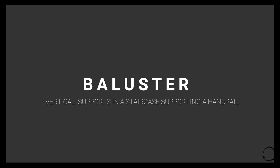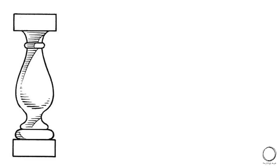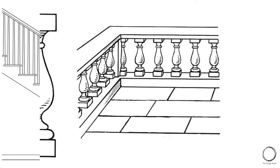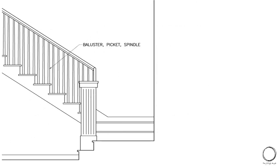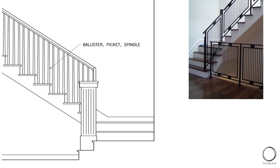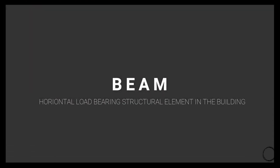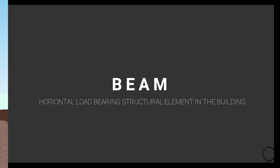Moving on, the next term is baluster, which means vertical supports in a staircase supporting a handrail. Here is one kind of baluster used many times in series to support the handrail above. The baluster can be in any shape and form, or it can also be used for staircases with glass railings, as you can see in the image.